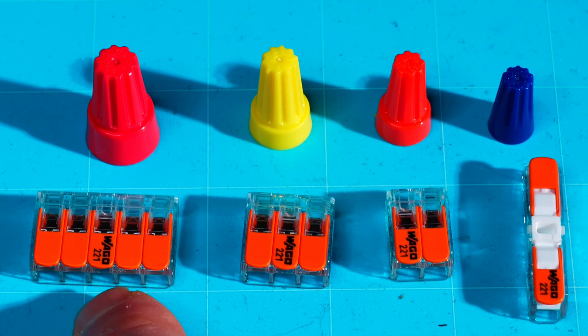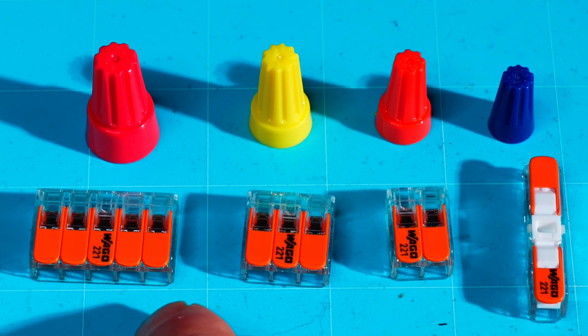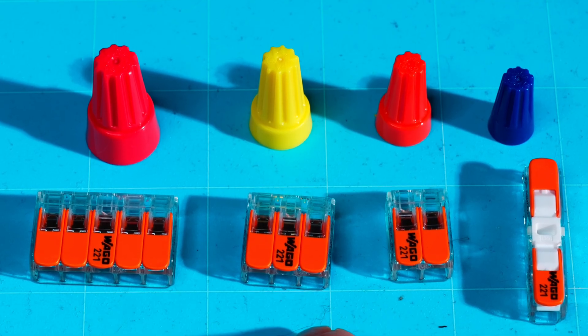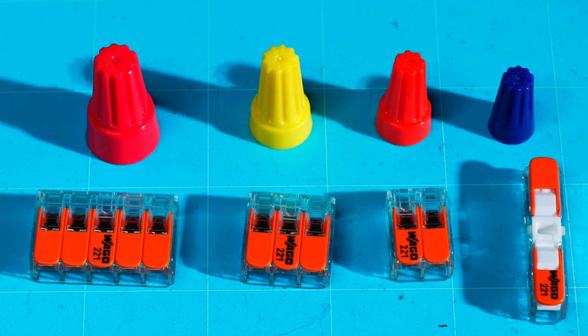And also with the Wago 221s, as you can see here, I have a five wire connector. So you can put five wires, connect them all together there. There's also a four not shown here. There's a three, a two, and also the butt splice.